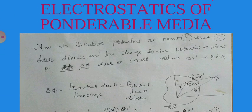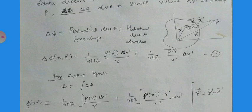To calculate the potential at observation point x due to the dipoles and free charges, we consider the observation point at x and source point at x'. The distance between them is |x - x'|. The contribution dφ from a small volume element dv' includes potential due to free charges and potential due to the dipoles: dφ(x, x') = (1/4πε₀)[ρ(x')dv'/r + P·r̂/r² dv'].